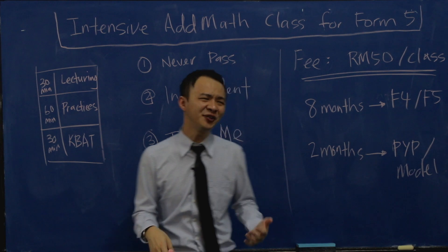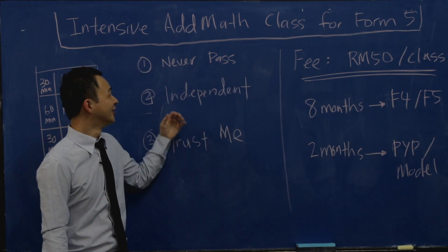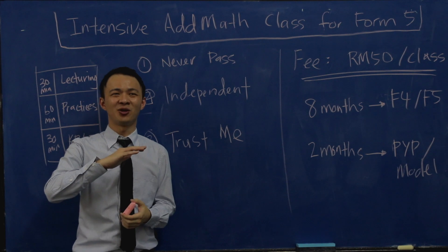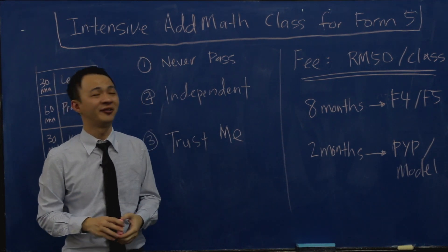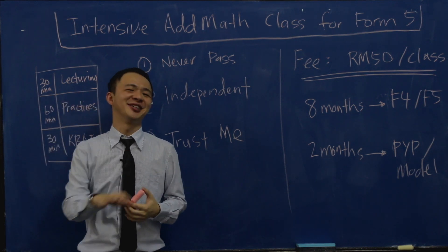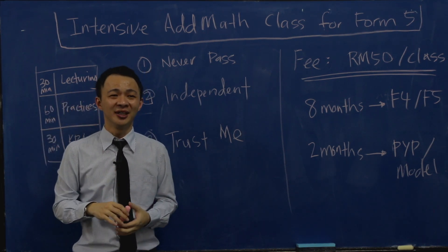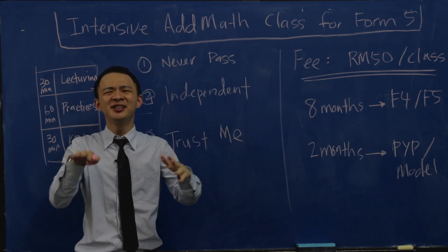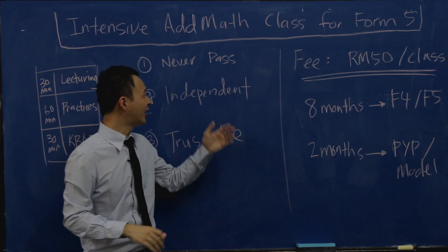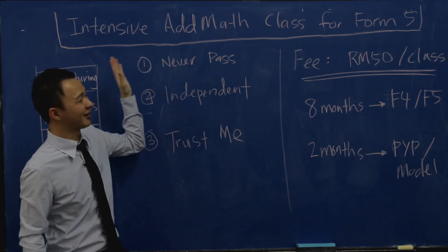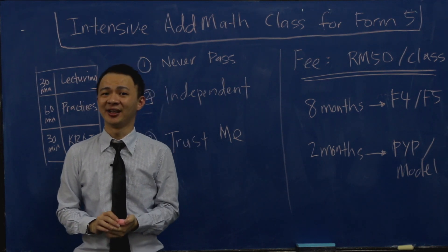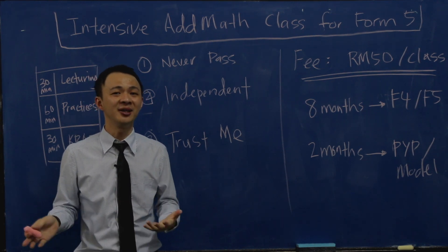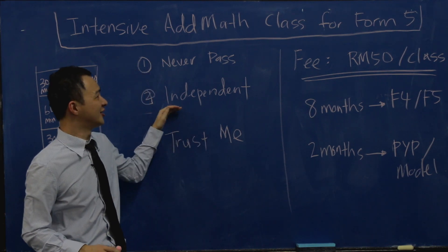If you are interested to join my class, there are a few criteria I hope you meet. The first is that you have never passed MF, or you only scored a D and never got a C. I want to make sure all students are at the same level, because mixing very strong students with very weak students disrupts the rhythm of the class. This class is purposely for students who never passed MF but wish to pass — ideally scoring an A or at least a B.